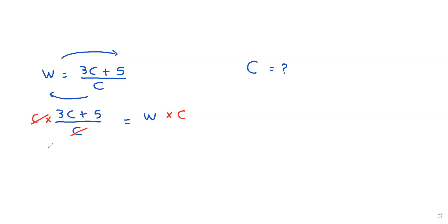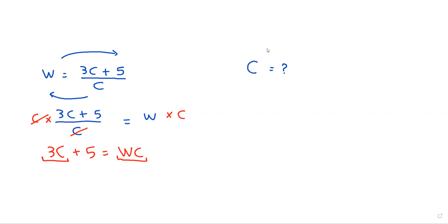We end up with 3c plus 5 equals wc. We now have two terms containing c — one on the left and one on the right. To collect them on one side, we subtract wc from both sides.